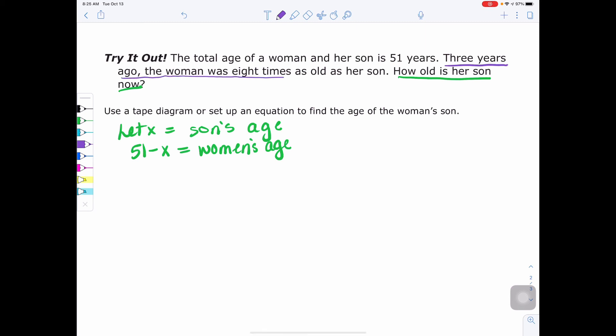Three years ago, the woman was eight times as old as her son. Think of was or is any of those words as your equal sign. So think about that as your equal sign. So my equal sign is there. On the left-hand side, it says three years ago, the woman. Well, the woman right now is 51 minus X years old. Three years ago means I have to subtract her age by three to figure out what she was three years ago. So on the other side, it says eight times as old as her son. Now remember, this is still three years ago. So the son right now is X years old. But three years ago, we would have to subtract three from his age and then multiply it by eight. So there is the equation I have that we need to solve.